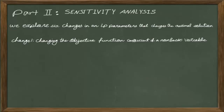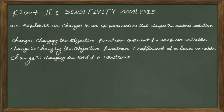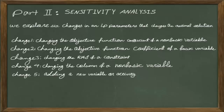The first change is changing the objective function coefficient of a non-basic variable. The second change is changing the objective function coefficient of a basic variable. The third change is changing the right-hand side of a constraint. The fourth change is changing the column of a non-basic variable. The fifth is adding a new variable or activity, and the last one is adding a new constraint.